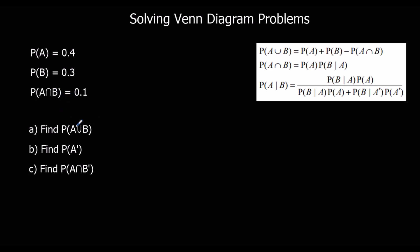The ∪ shape means the union, so that's either both happening together, or just A is happening, or just B is happening. And the dash means NOT, so this is the probability of NOT A — A not happening.